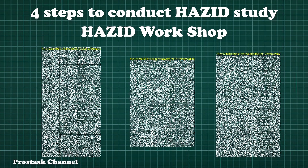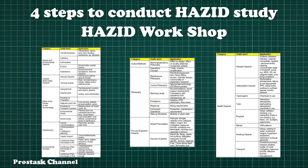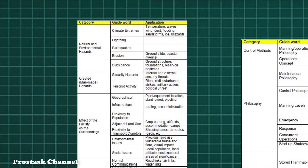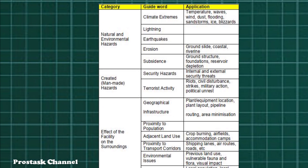The third step is the Hazard Workshop. The HAZID Study will be performed by using guidewords. The guidewords assessed during the HAZID Study include External and Environmental Hazards, such as Lightning, Sandstorm, Ice, Earthquake, Subsidence, Flooding, and Fire from adjacent locations.